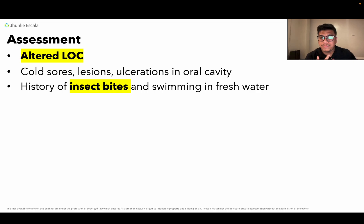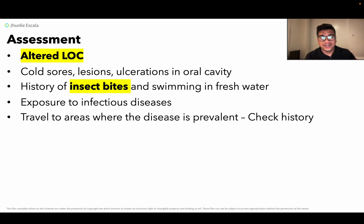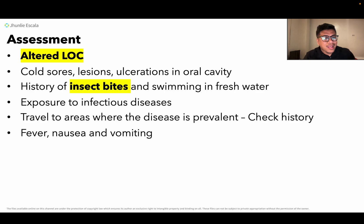There is also a history of insect bites and swimming in fresh water — most people who develop encephalitis have such histories. Exposure to infectious diseases is also a possible factor, as well as travel to areas where the disease is prevalent. Always check the patient's travel history to high-incidence areas for encephalitis. Fever and vomiting are also assessment findings.